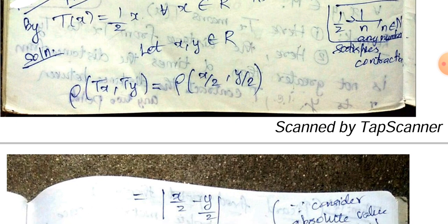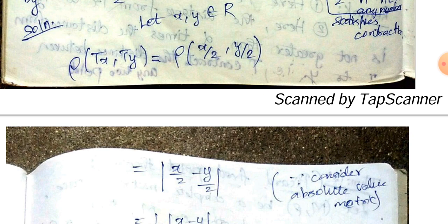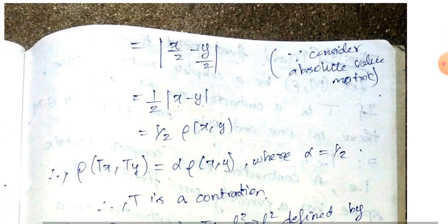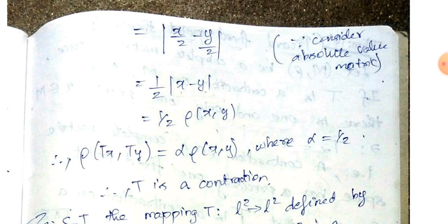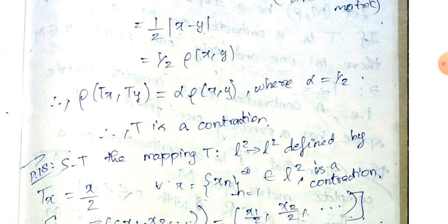Let x, y belong to ℝ. Then ρ(Tx, Ty) = |(x/2) − (y/2)| = (1/2)|x − y| = (1/2) · ρ(x, y) = α · ρ(x, y). The condition is satisfied, therefore T is a contraction.